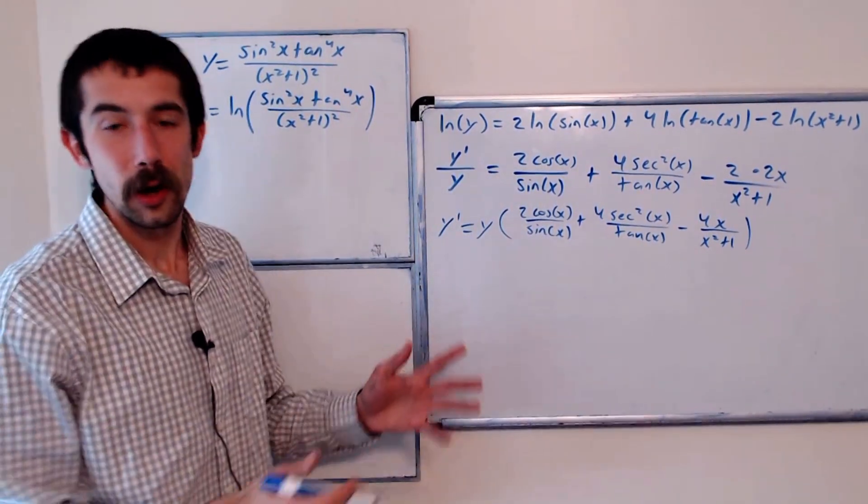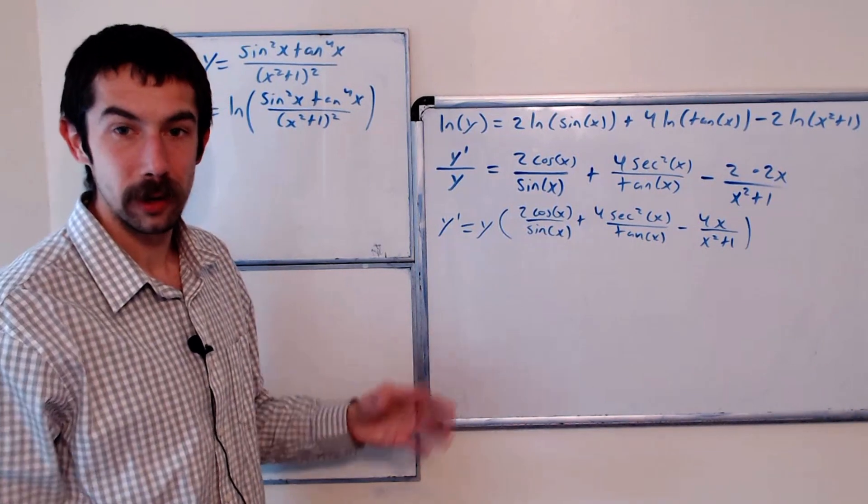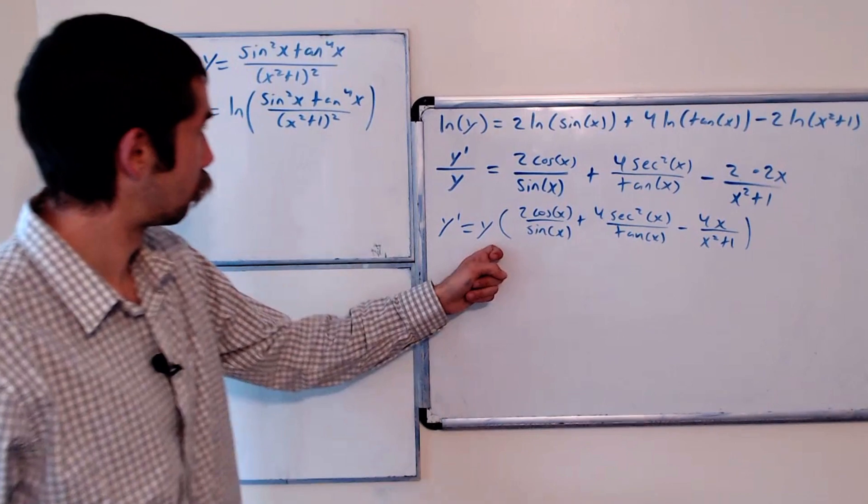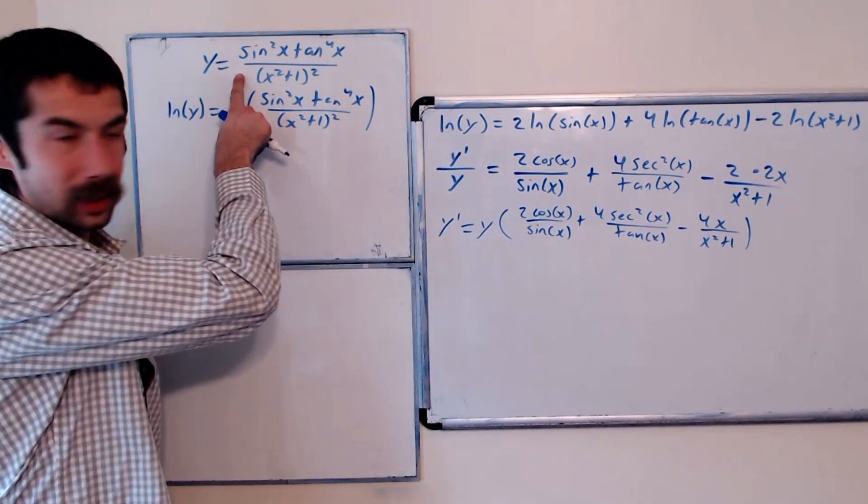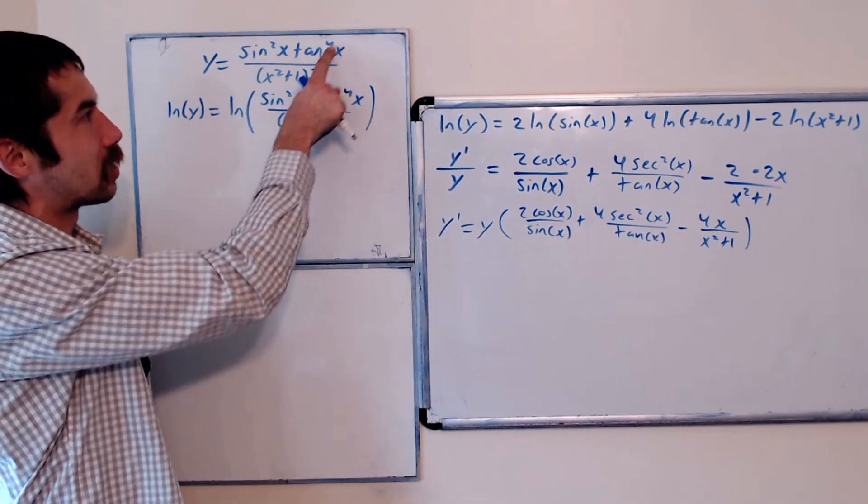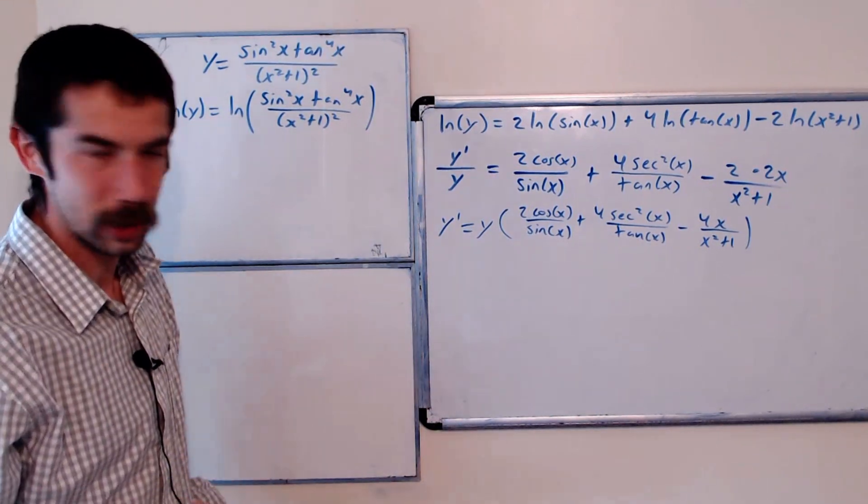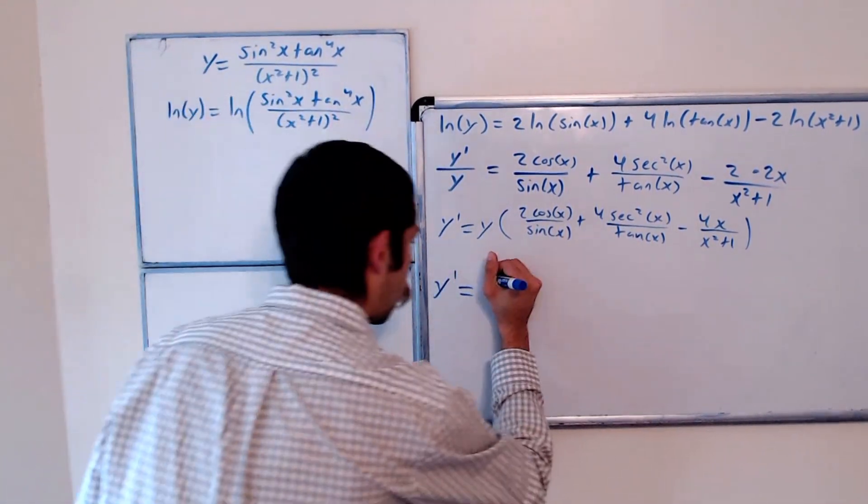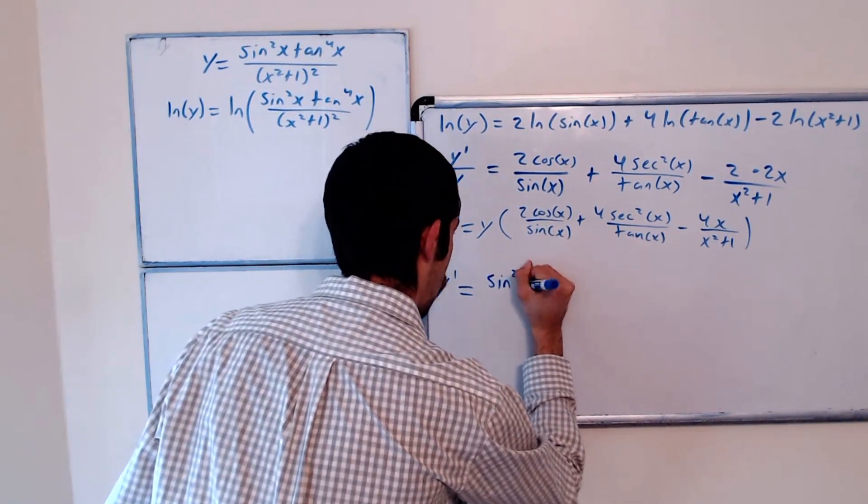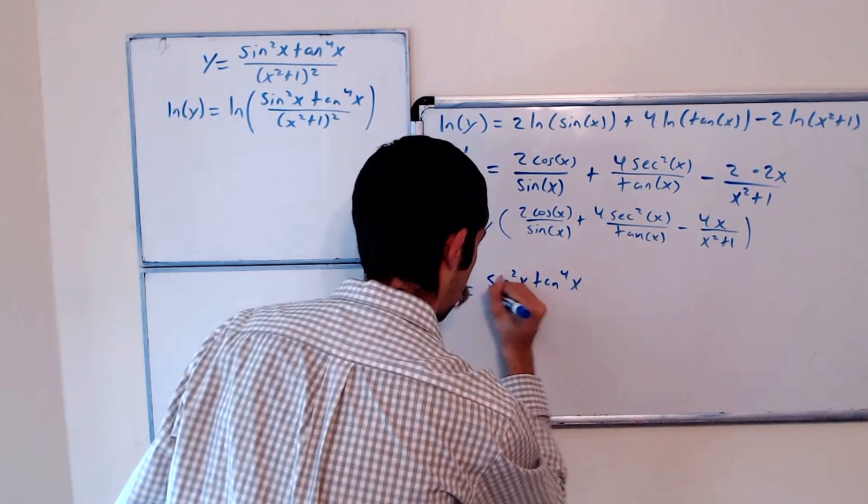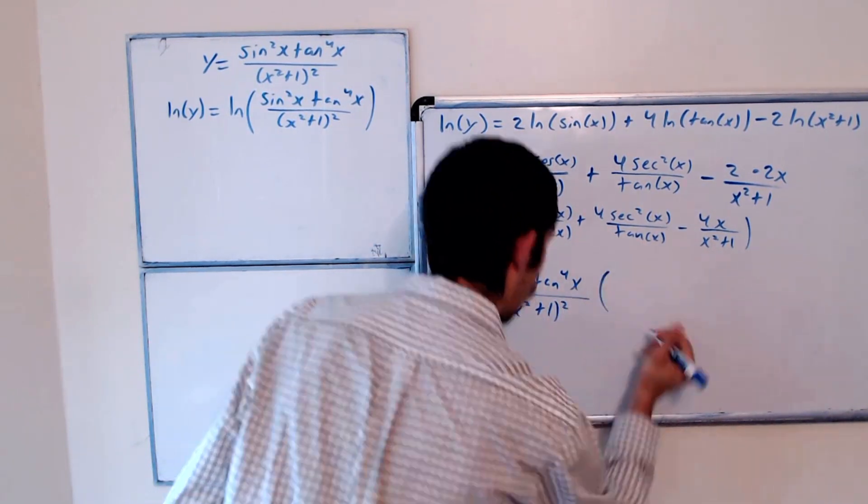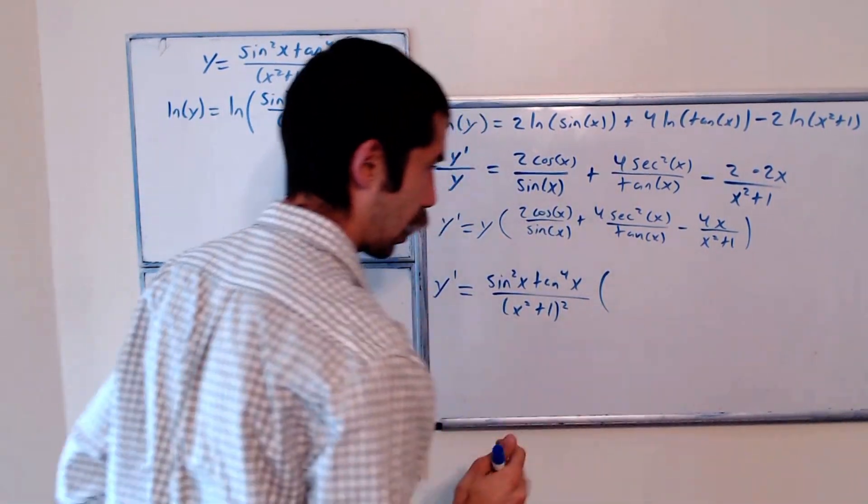And we started with x as our variable, so we better end with x as our variable. So we could replace y with what we started with. Y is equal to sine squared x tangent to the fourth x over x squared plus 1 squared. So y prime is equal to sine squared x tangent to the fourth x over x squared plus 1 squared times this guy here.